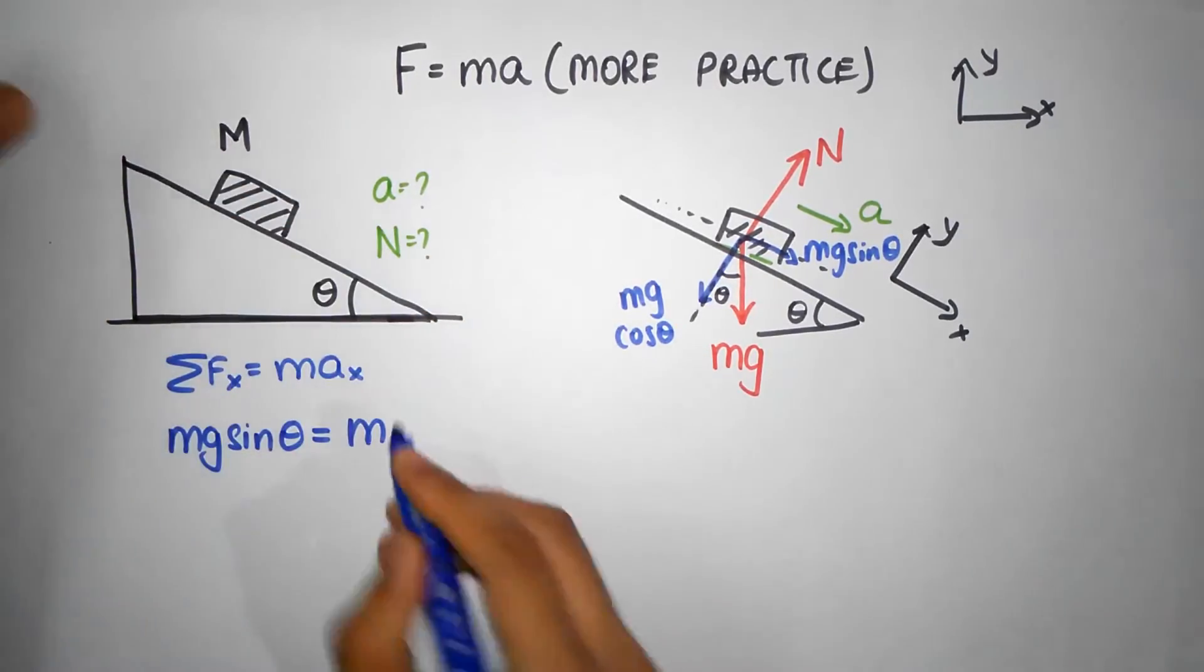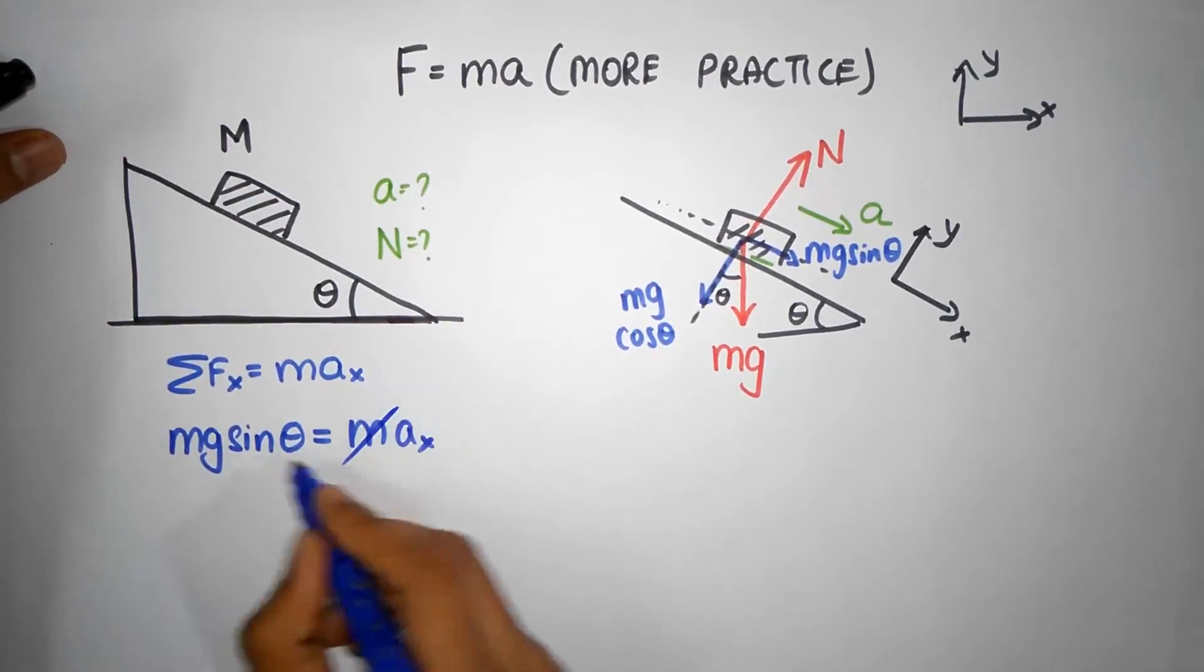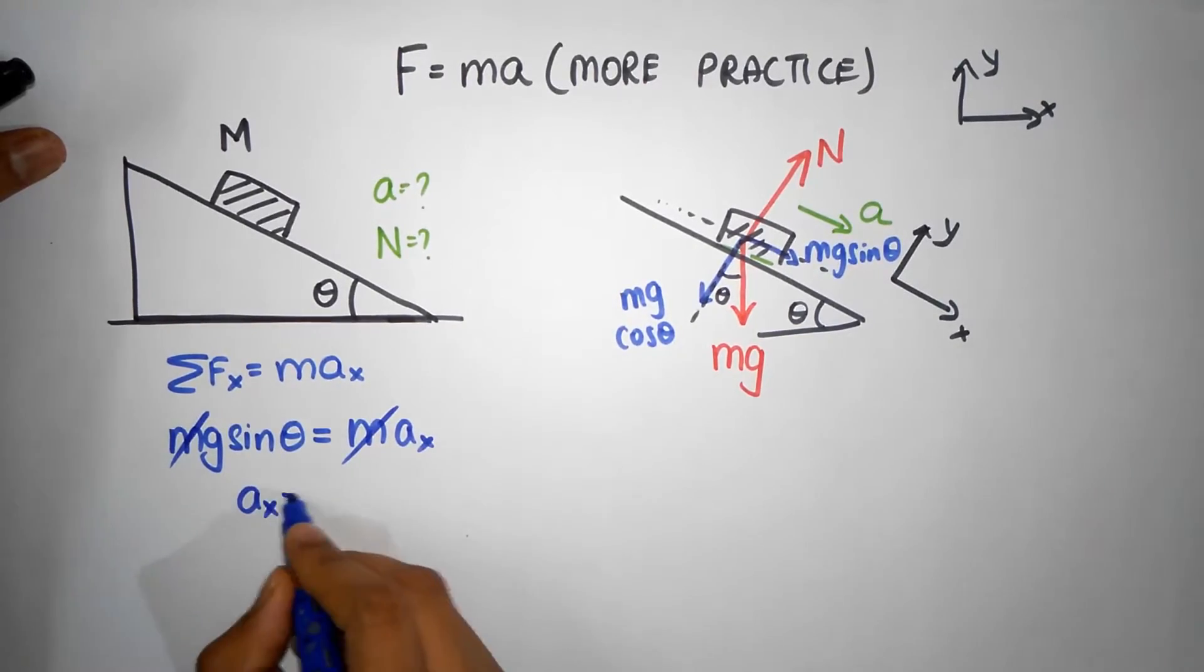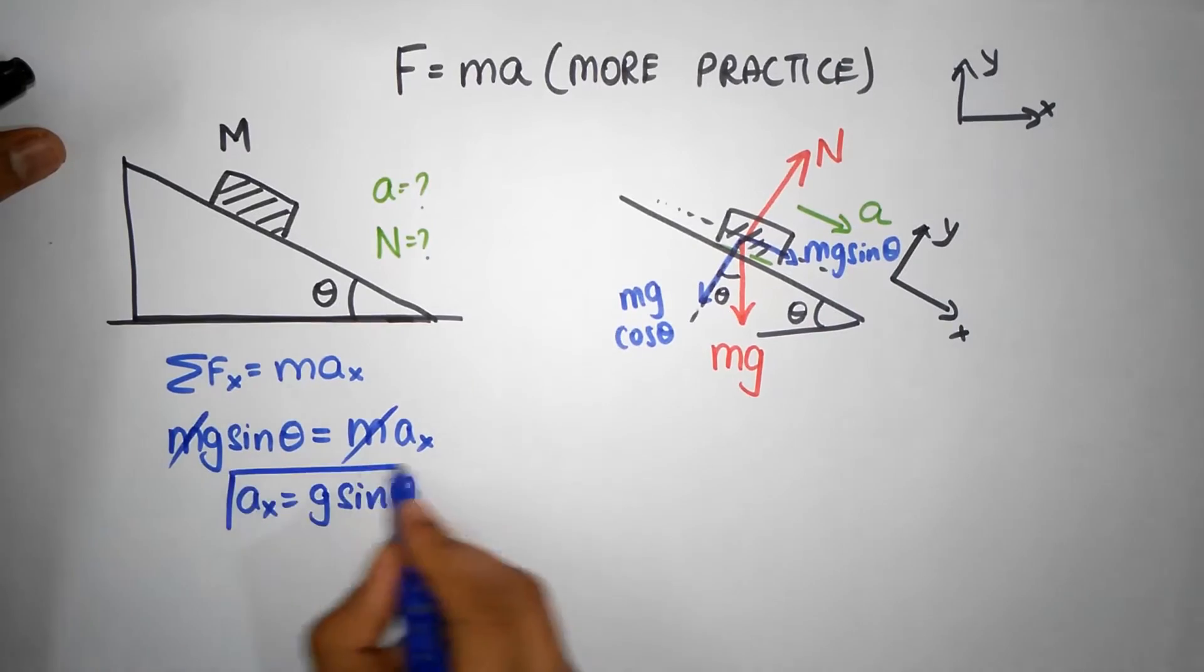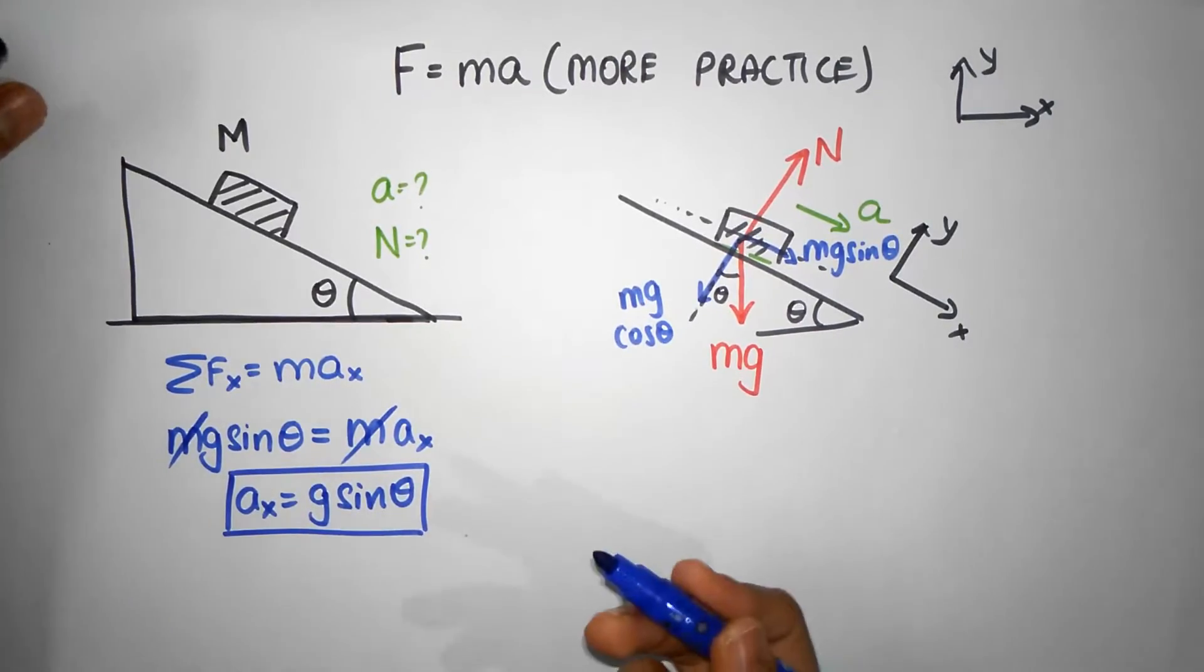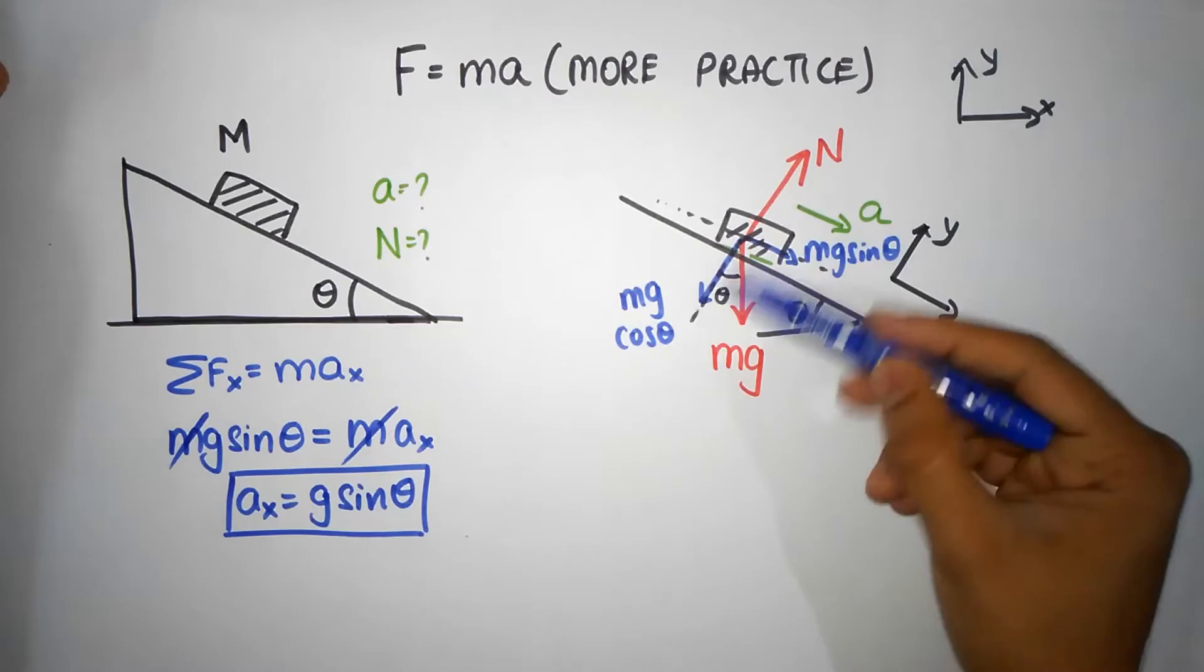That should be equal to mass times the acceleration along the x-direction. That's it. There is the acceleration: that's g sin theta. Tada, we got it. It was a straightforward problem, but anyways wanted to tackle it.